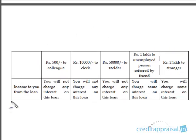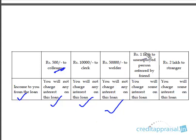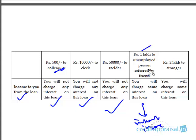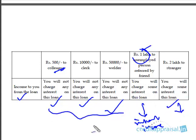Will you earn any income from the loan? For the colleague, clerk, and neighbor — these are small personal loans between acquaintances, so you would charge no interest. But for the unemployed person borrowing 1 lakh and the stranger borrowing 2 lakhs, given the high risk, you would definitely charge some interest. So in these last two cases, you stand to gain interest income if the business succeeds.